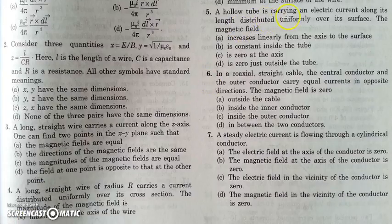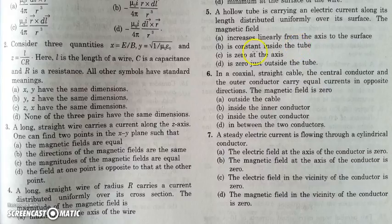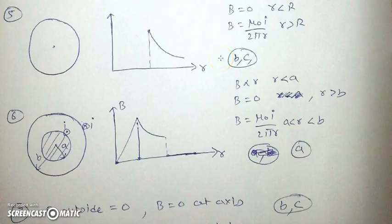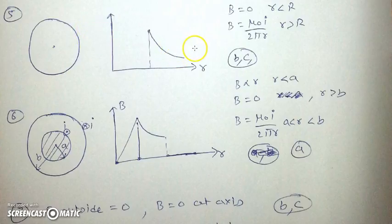In the next question there is a hollow tube carrying a current distributed uniformly over its surface. The magnetic field is zero inside the tube because the tube is hollow — no enclosed current. So the field is constant inside, but that constant is zero. B and C are correct. Option D says the field is zero just outside the wire — no, it is not zero outside. The field is zero only inside. Looking at the diagram: inside the hollow tube the field is zero, and as we move outside it decreases. So B and C are the only correct options.